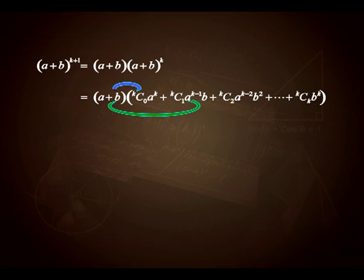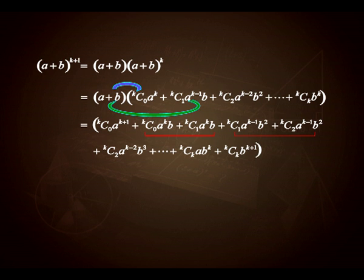Multiplying (a + b) with the first term gives kC0·a^(k+1). When b gets multiplied with the first term we get kC0·a^k·b. Similarly, when a multiplies the second term we get kC1·a^k·b, and when b multiplies the second term we get kC1·a^(k−1)·b². Take a minute to write this very carefully — this is the most crucial step of the proof. If this step goes wrong, simplification becomes very difficult. So be very careful.